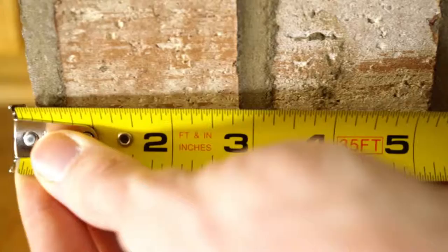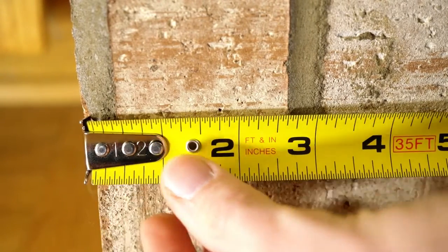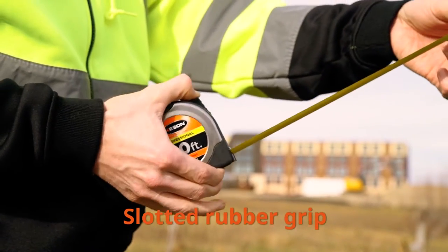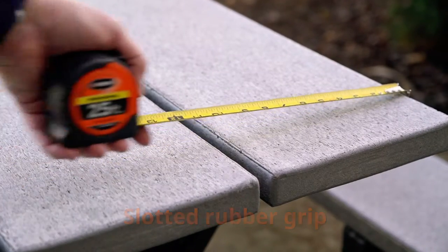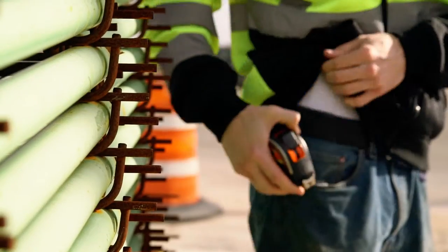The TruZero 3 riveted hook offers superior strength. The Professional Series features a slotted rubber grip and provides our highest impact resistance. The tape will fit easily into a tape holder.